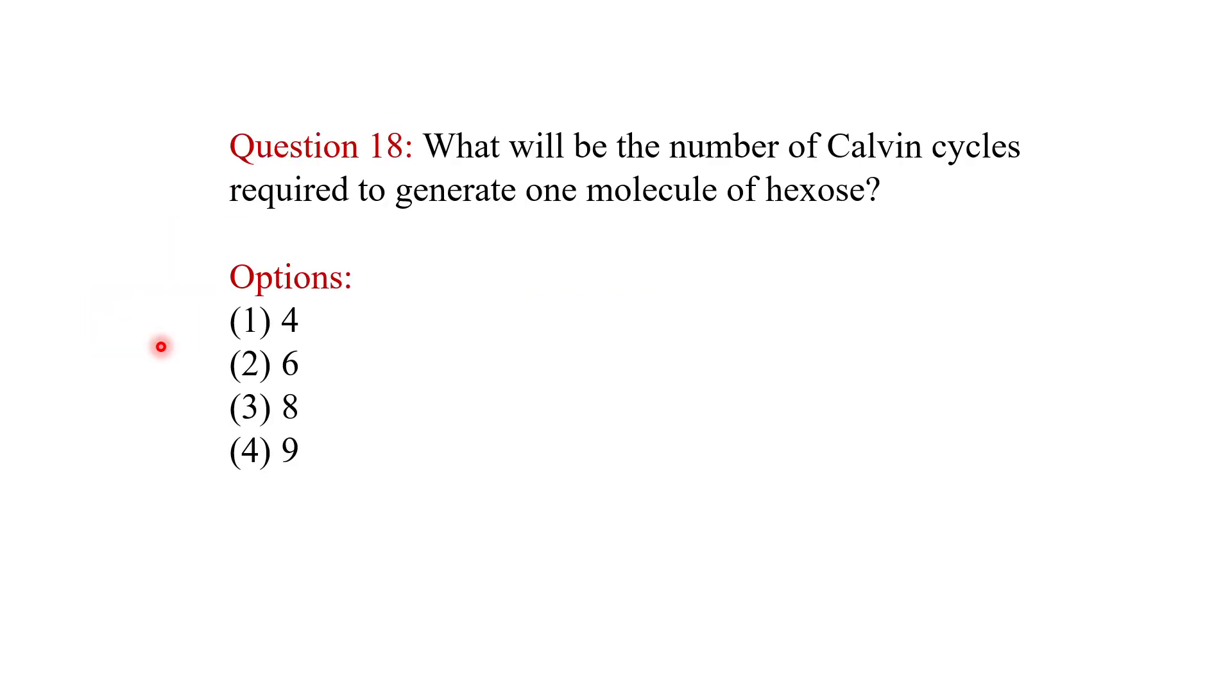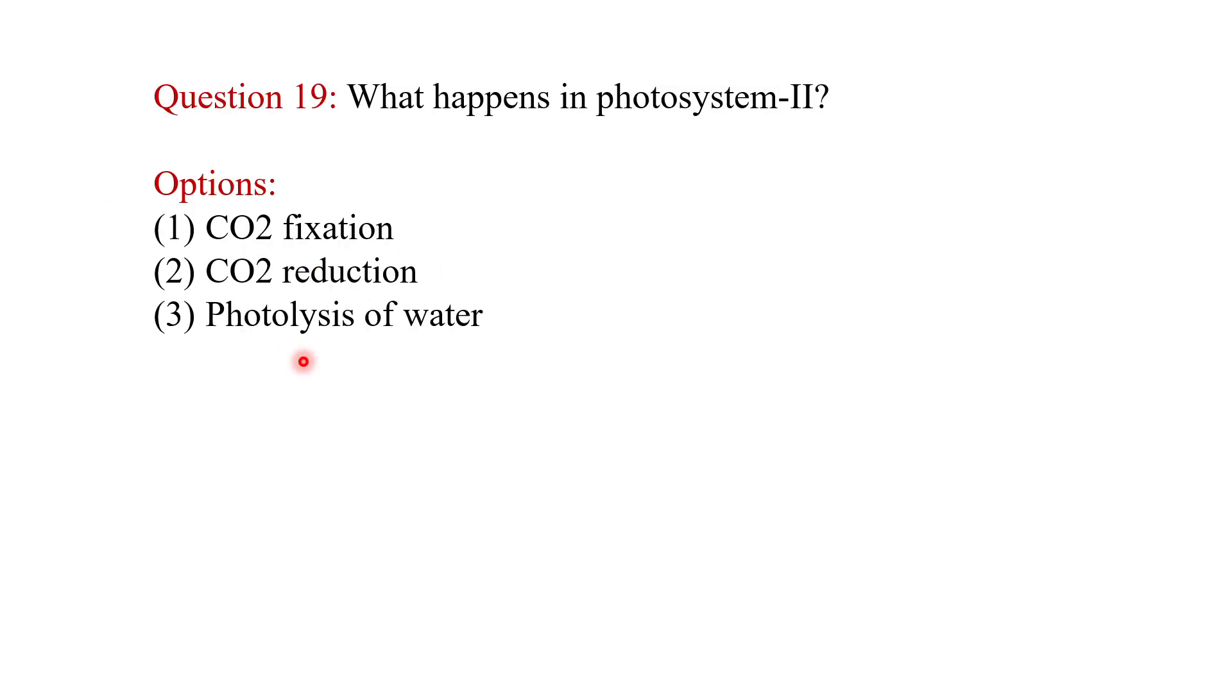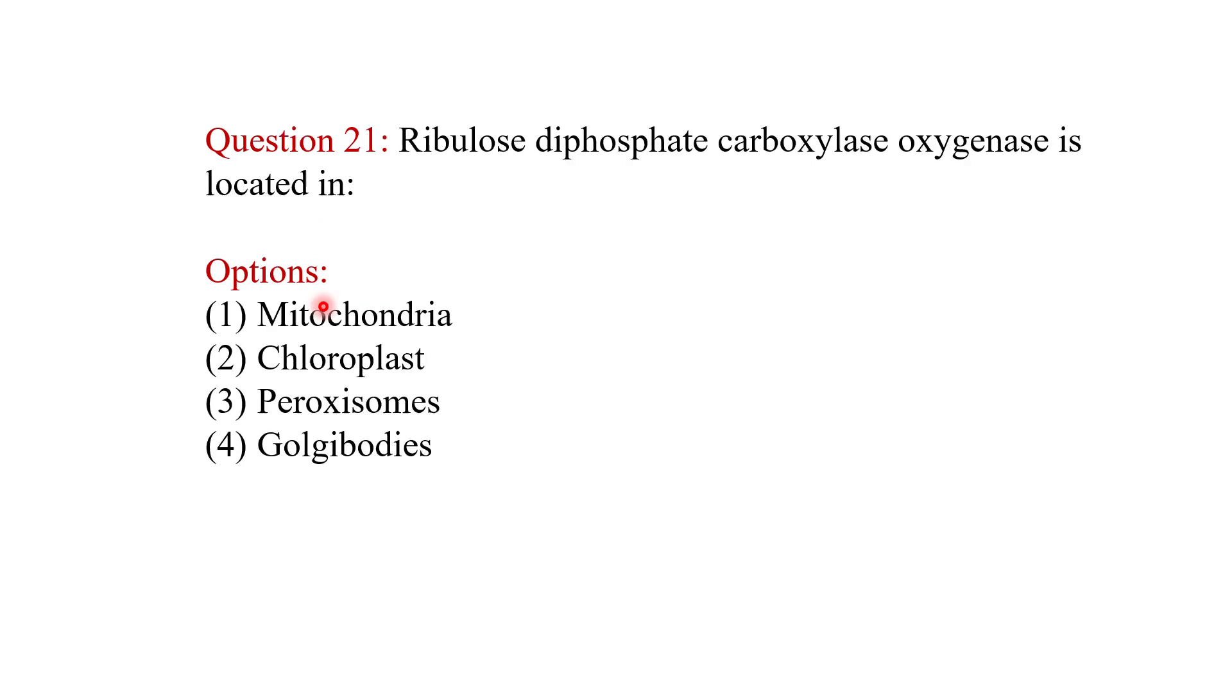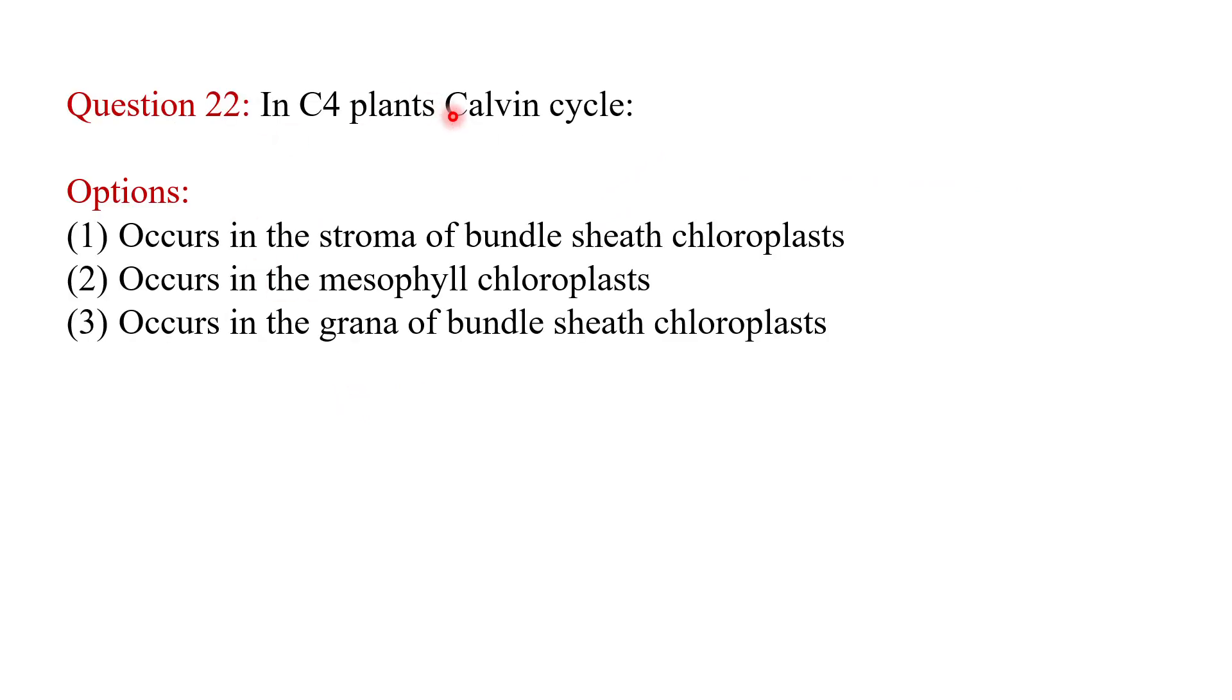What will be the number of Calvin cycles required to generate one molecule of hexose? The answer is six. What happens in photosystem 2? CO2 fixation takes place. Which of the following photosynthetic bacteria have both PS1 and PS2? The answer is cyanobacteria.